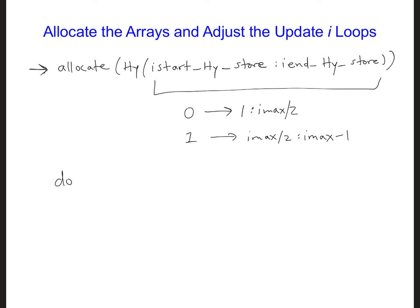So for example, in the updating loop, we have do I equal, and right now it might be from 1 to IMAX minus 1. We need to replace that to only go from IStart HY Update, the starting HY Update index to the IEND HY Update index. So here we'd have a regular HY Update, and you can do the same for the EZ Array.